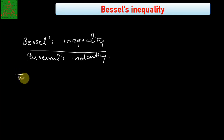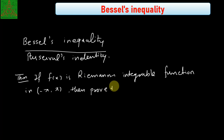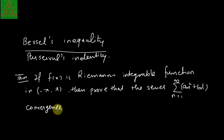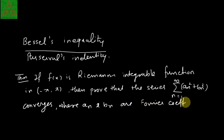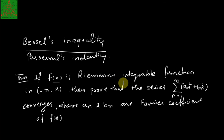I am taking this as a theorem and proving it. If f is a Riemann integrable function on the interval minus π to π, then prove that the series — summation of aₙ² plus bₙ², n running from 1 to infinity — converges, where aₙ and bₙ are the Fourier coefficients of f. The theorem says that if f is Riemann integrable, or equivalently piecewise continuous, then this summation always converges when aₙ and bₙ are the Fourier coefficients of f.